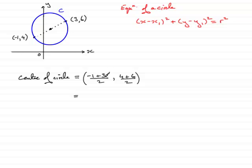So what does that come to? Well, minus one add three divided by two is going to be one, and four add six, which is ten, divided by two is five. So the centre coordinates are one, five. Let's just mark that in as one, five. So that means we've got our x1 and our y1 as being one and five.